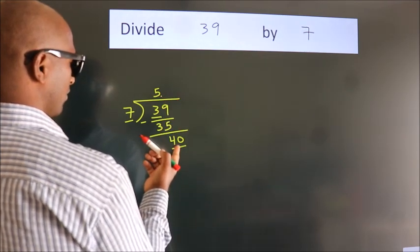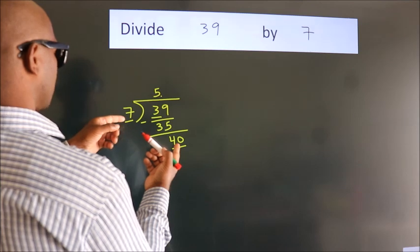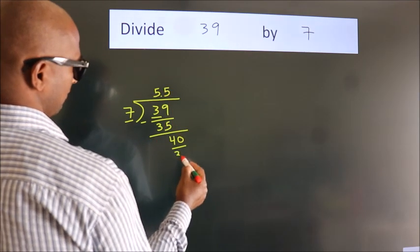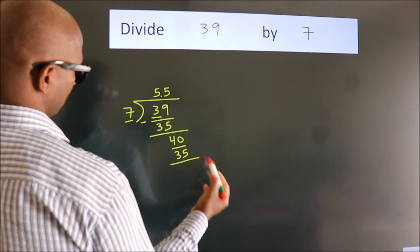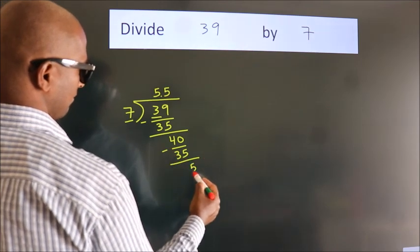A number close to 40 in 7 table is 7 fives 35. Now we subtract. We get 5.